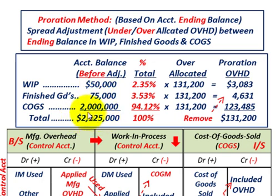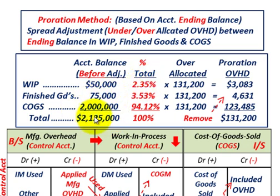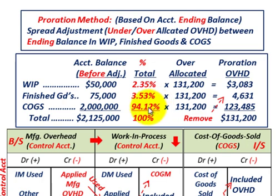Totaling up all three accounts, we get $2,125,000. Work in process has a balance of $50,000, which is $50,000 divided by $2,125,000, representing 2.35%. Finished goods has a balance of $75,000, divided by $2,125,000, representing 3.53%. Cost of goods sold has a balance of $2,000,000 divided by $2,125,000, representing 94.12%. The total percentage adds up to 100%.